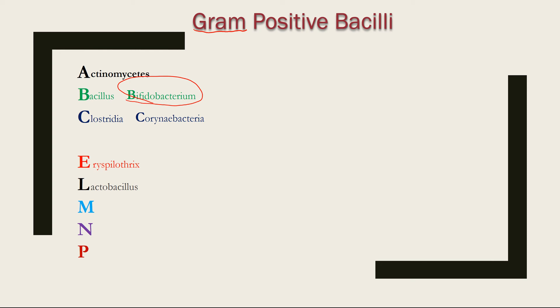M stands for Mycobacterium and Mobilincus. N stands for Nocardia. P stands for Propionibacterium. I hope you enjoyed. Happy learning!